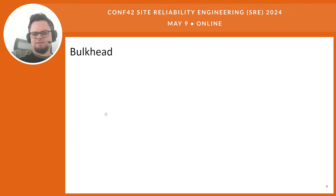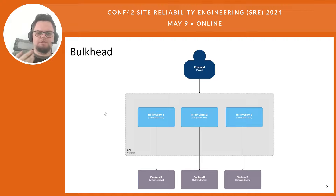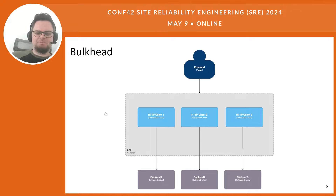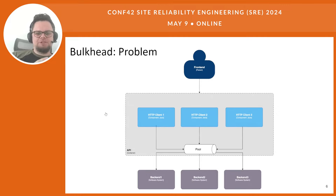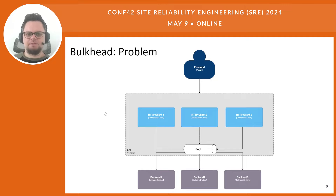Starting with bulkhead. Imagine we have a simple, ordinary application — we have several backends behind us to get some data from, and inside our application we have several HTTP clients connected to those backends. What can go wrong? Simple application, right? But it turns out they all share the same connection pool, and they share other resources like CPU and RAM.